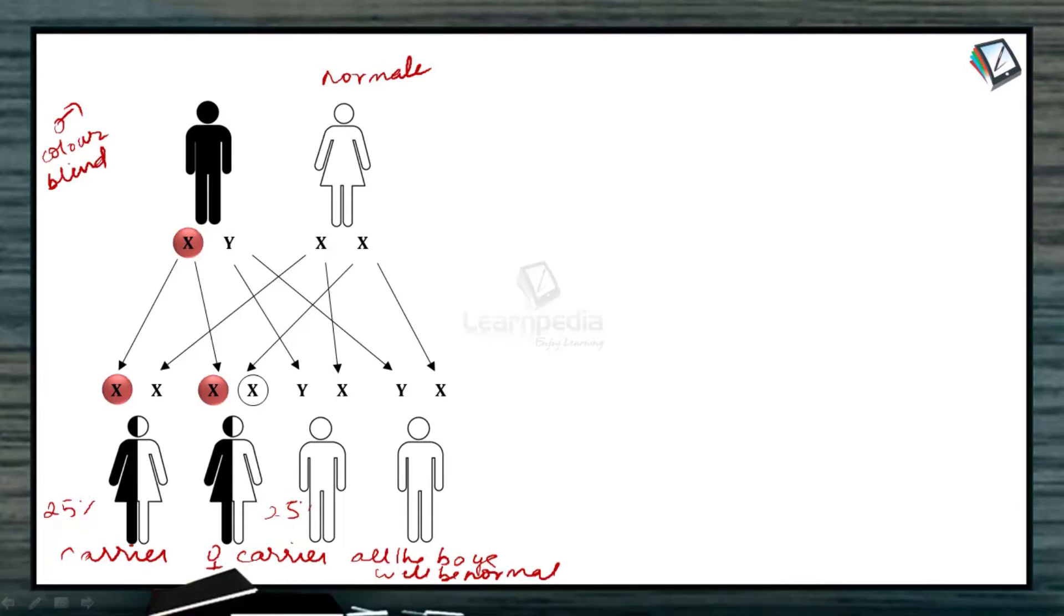So here we have to conclude: if the father is colorblind and the mother is normal, then the girls born to them will be carriers of this particular disease.